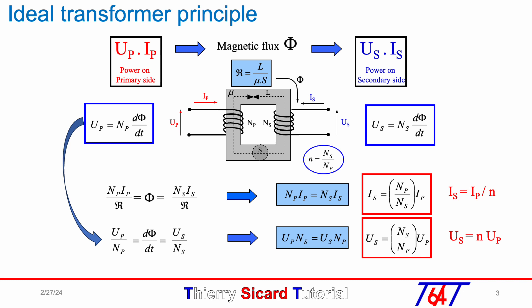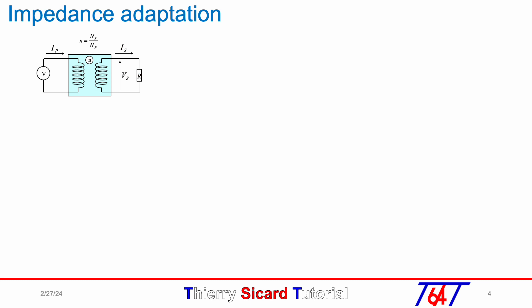So U_S and I_S can be replaced respectively by n U_P and I_P over n. The transformer ratio is n, which is given by N_S over N_P, respectively the secondary and primary number of turns.